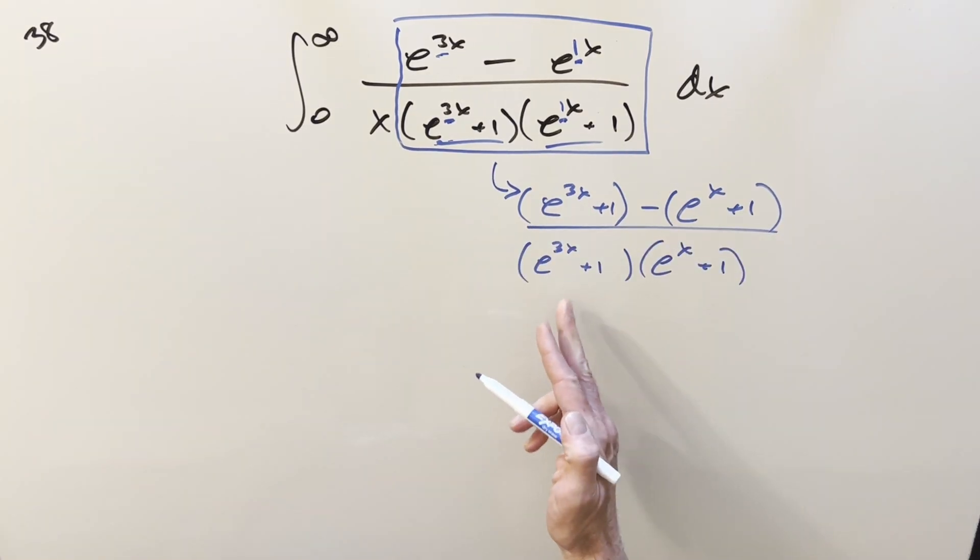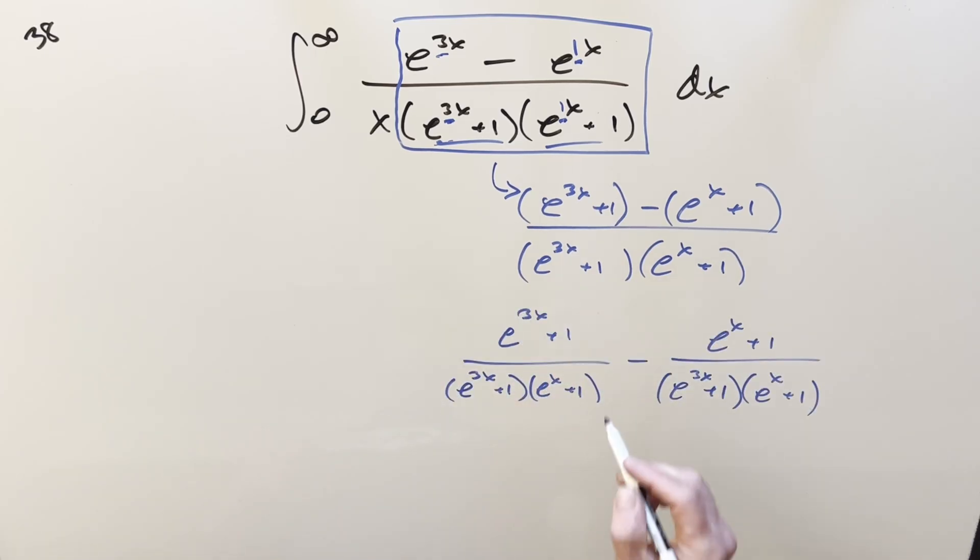Then from here, what you can do is break this up into two fractions, breaking it on the minus sign, and then we're going to get all kinds of cancellation. This is going to cancel here, this one's going to cancel here, just leaving ones in the numerator.